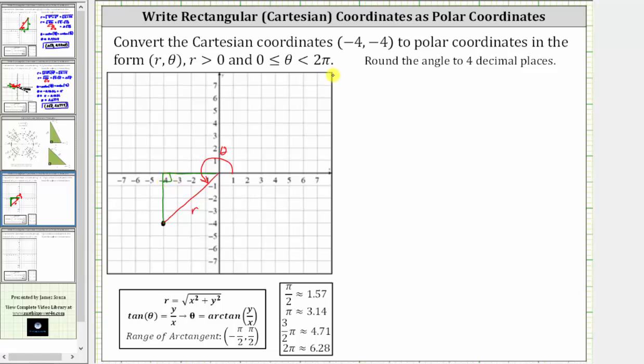Because x is negative four, we label this leg negative four. Because y is also negative four, we label this leg negative four.